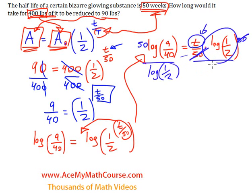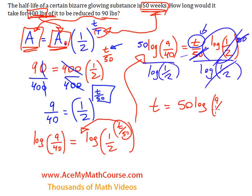So t equals 50 times the log of 9 over 40, all divided by the log of one-half. Now I can actually evaluate this.